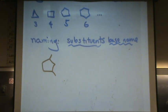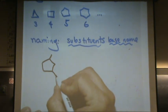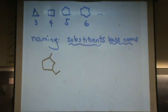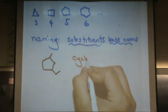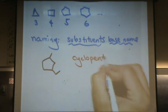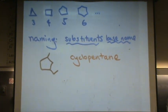Let's say we have one of these. Let's make it more exciting. The base name - you don't look for the longest chain this time. You're going to go straight to the cyclo part. So the base name here is cyclopentane. There's no long chain here.